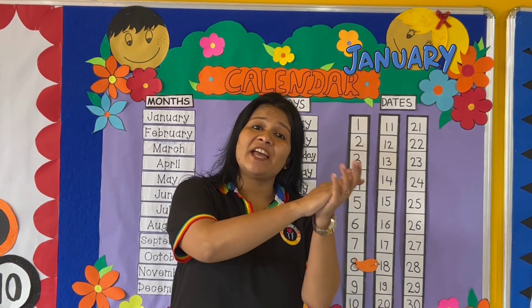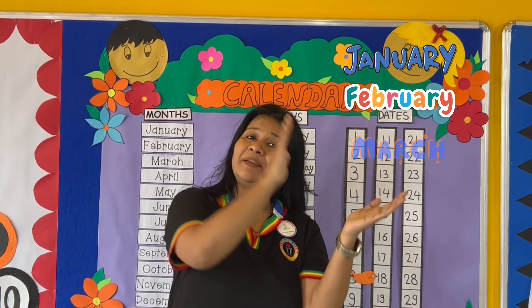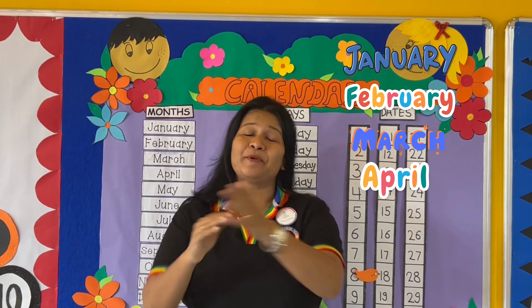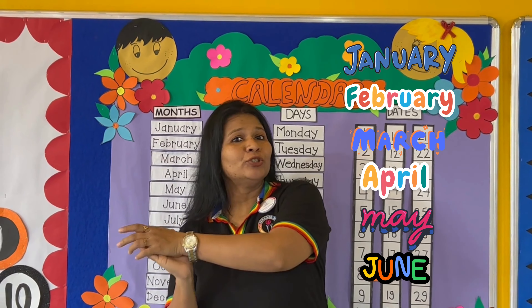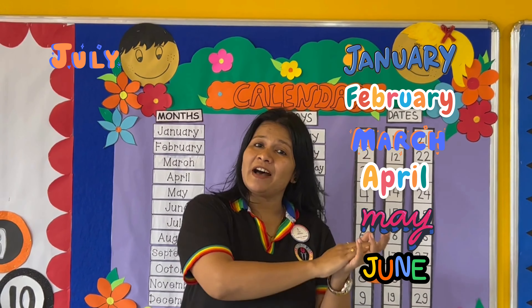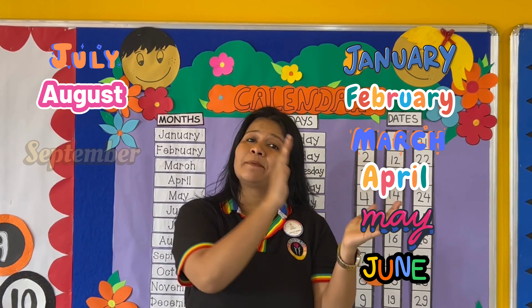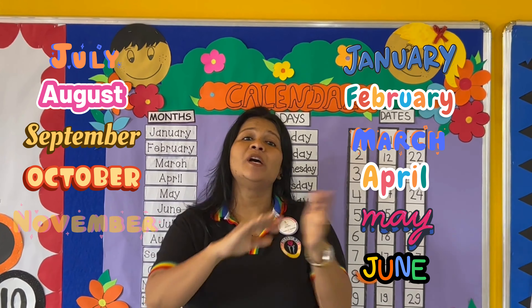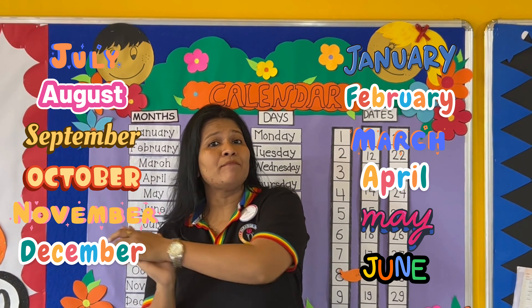Let's sing the rhyme. January, February, March and April, May, June, July and August, September, October, November, December.